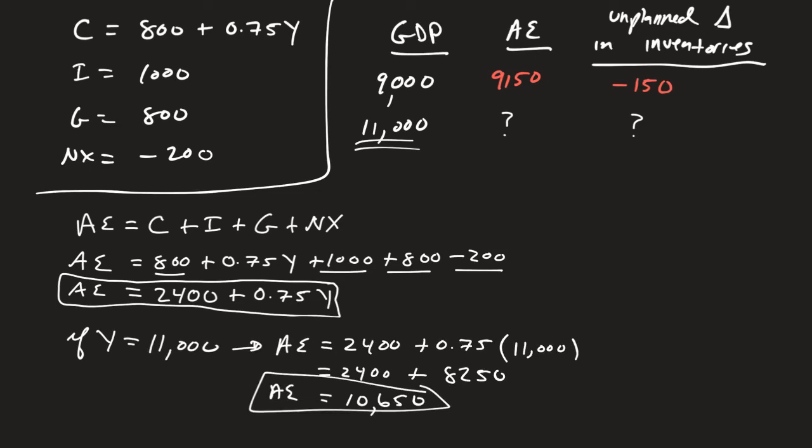Meaning we can go ahead, again, we can erase this question mark and add in our answer that aggregate expenditure is equal to 10,650 when GDP is equal to 11,000. And then the last thing we can erase, let's go ahead and erase the question mark with the unplanned changes in inventories.